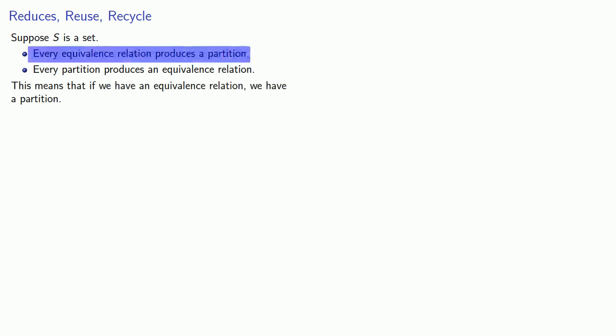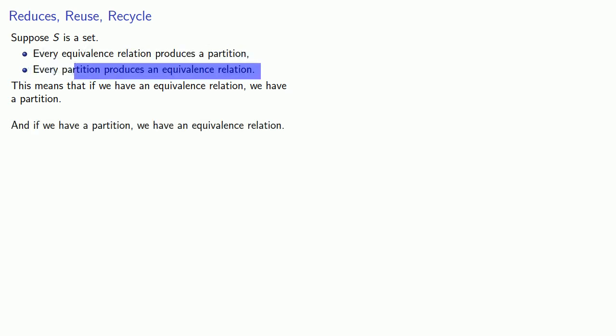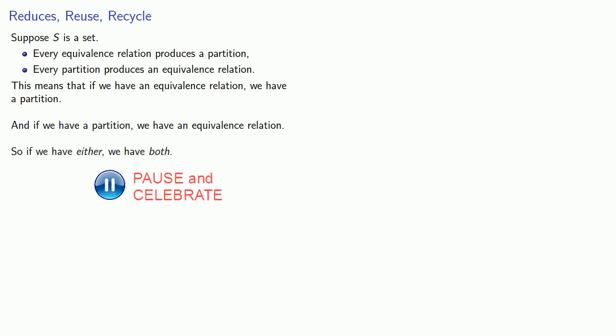And let's summarize this. Suppose s is a set. Every equivalence relation produces a partition, and every partition produces an equivalence relation. This means that if we have an equivalence relation, we have a partition, and if we have a partition, we have an equivalence relation. In some communities, this is known as a twofer. If we have either, we have both. And what that means is that we can work with either one.